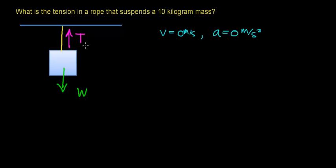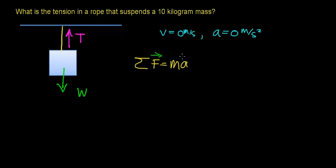Now that we've identified the forces acting on this box — the tension force pulling upward and the weight force pulling downward — we can apply Newton's second law, which says that the sum of the forces acting on an object equals the mass times the acceleration. Newton's second law is a vector equation, so we have to take into account the directions the forces are acting. In this case, the forces are acting in the up and down direction only — that is, in the y direction.